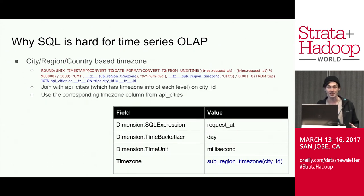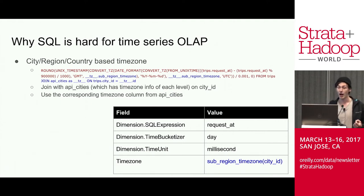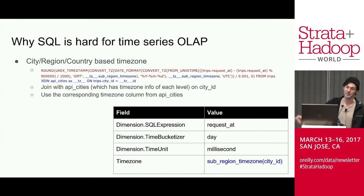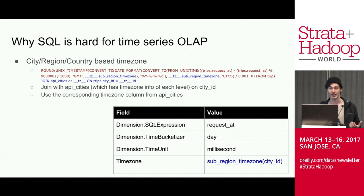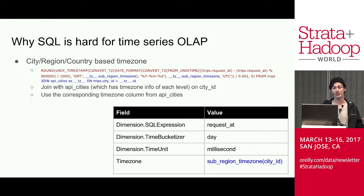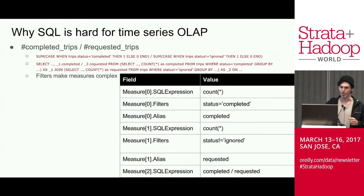In a slightly more complex time handling example: if the user wants to join their base table against a dimension table containing timezone information, then use that timezone for the conversion, we handle this by adding an implicit join to the relevant dimension table based on the key specified. This is useful for scenarios like querying to see how many trips occurred on Halloween — every timezone has a different absolute time period representing that day.